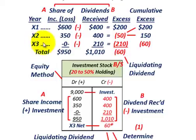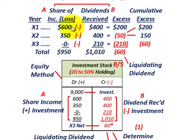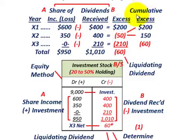We're looking at three years and making the change at the end of year X3 from the equity method to the fair value method because the ownership interest is now less than 20%. We take our share of income and compare it against dividends received. For year X1: share of income was $600,000, dividends received were $400,000, giving an excess of income over dividends of $200,000. We keep track of the accumulated cumulative excess.